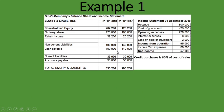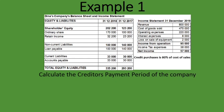Let's get into the example. We are given the statement of financial position, or balance sheet — specifically the equity and liability section — and the income statement, and we are asked to calculate the creditors payment period. Our formula is average accounts payable divided by credit purchases, times 365 days. Going to the liability section, under current liabilities, we have accounts payable.